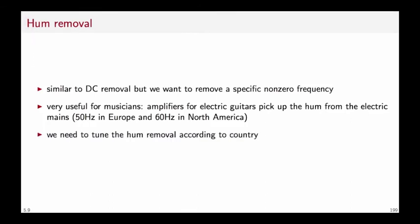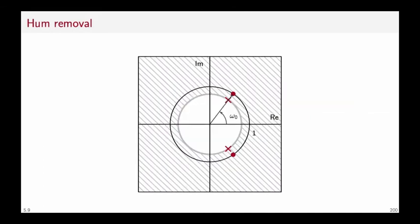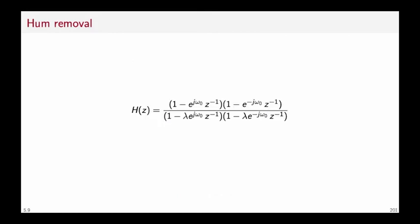So we need a filter to remove the hum and we need to make sure that we can tune this filter according to whether we're playing in Europe or in North America. The strategy is going to be exactly the same as the one we use to derive the resonator. We take a DC notch that has a zero in 1 and a pole next to it and we move both the pole and the zero along the circle of radius lambda and 1 respectively. Of course in order to have a real system we have to introduce a complex conjugate pole and a complex conjugate zero at an angle that is minus omega zero.